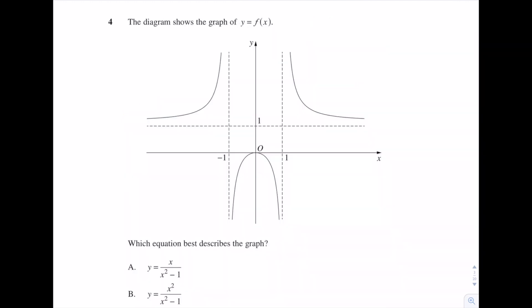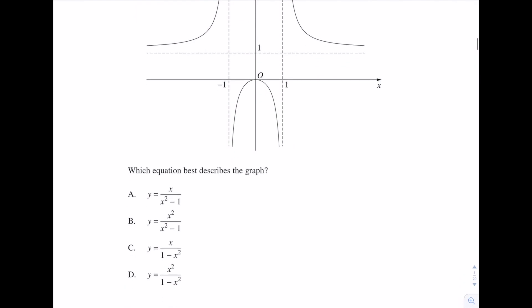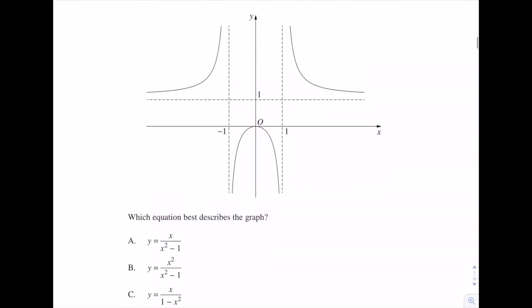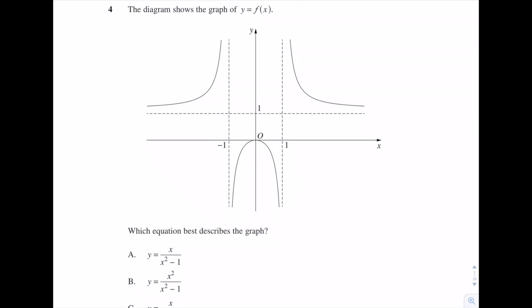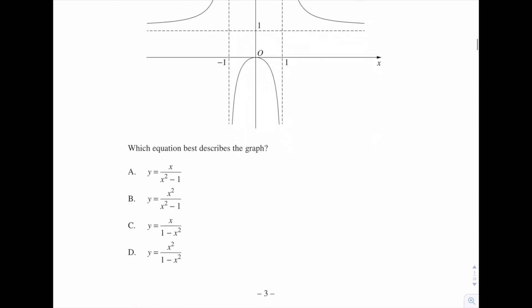The diagram shows the graph of y = f(x). Which equation best describes the graph? Okay, so things that we can notice about this graph here. The first thing I notice straight away is that f(x) is even. So let's write that down here. And that's going to be helpful because that's going to eliminate options A and option C.